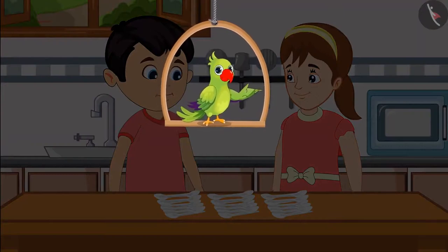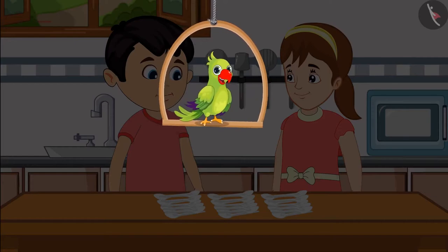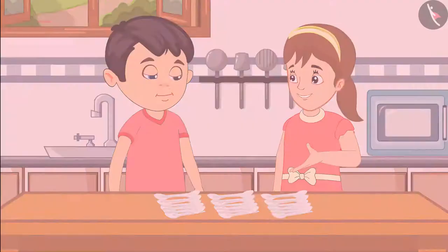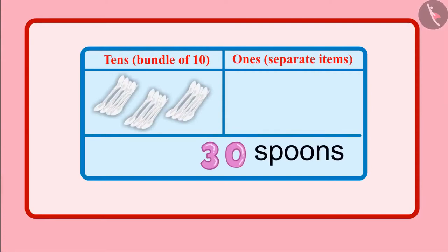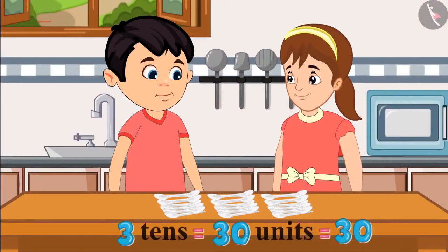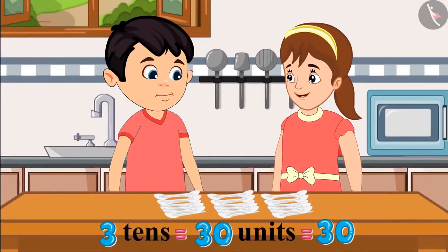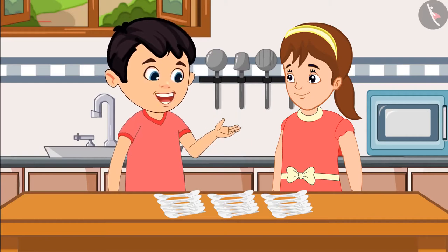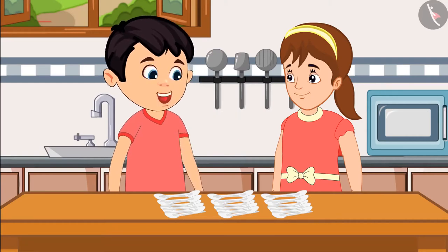Aarti corrected Chotu: 'You are counting it wrong. A group of 10 means one 10.' Children, do you think Chotu has bought 30 sets of 10 spoons? No — these are just 30 spoons. 30 does not mean 30 tens, but 30 units. 30 tens would be too many spoons. Chotu said: 'Okay, now I have understood. You are right, Aarti. Let's take spoons for the guests.'